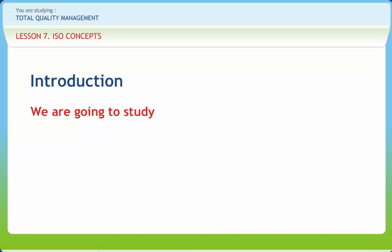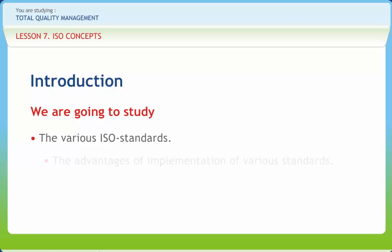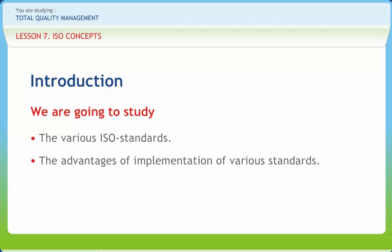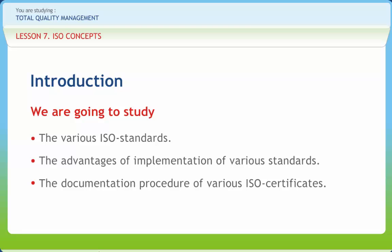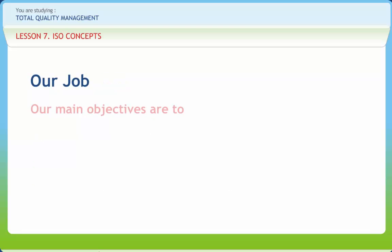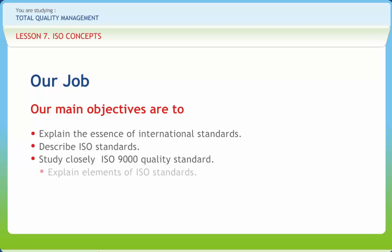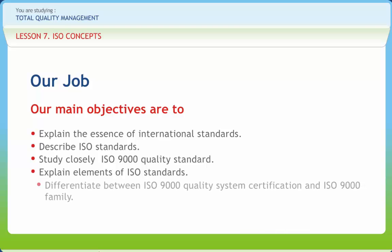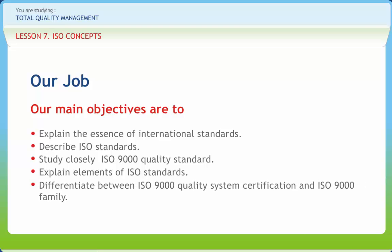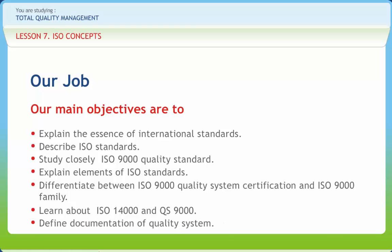In this lesson, we will describe the various ISO standards, advantages of implementation of various standards, and learn about the documentation procedure of various ISO certificates. After going through this presentation, you should be able to explain the essence of international standards, describe ISO standards, study closely about ISO 9000 quality standard, explain elements of ISO standards, differentiate between ISO 9000 quality system certification and ISO 9000 family, and learn about ISO 14000 and QS 9000, and define documentation of quality systems.